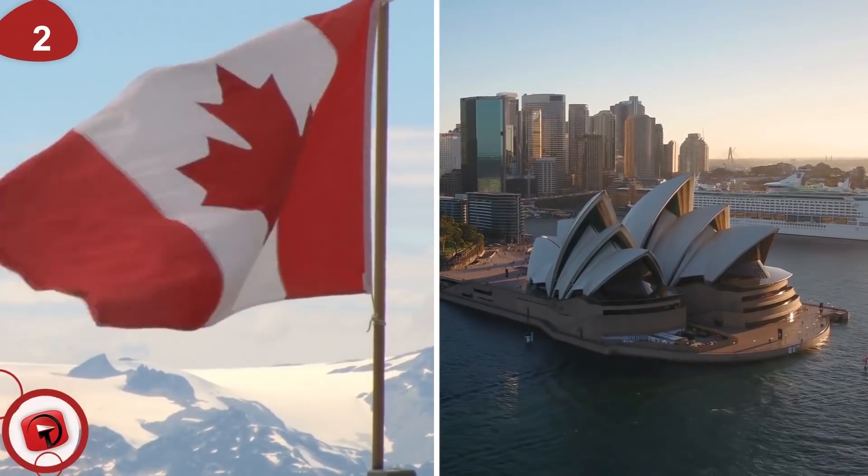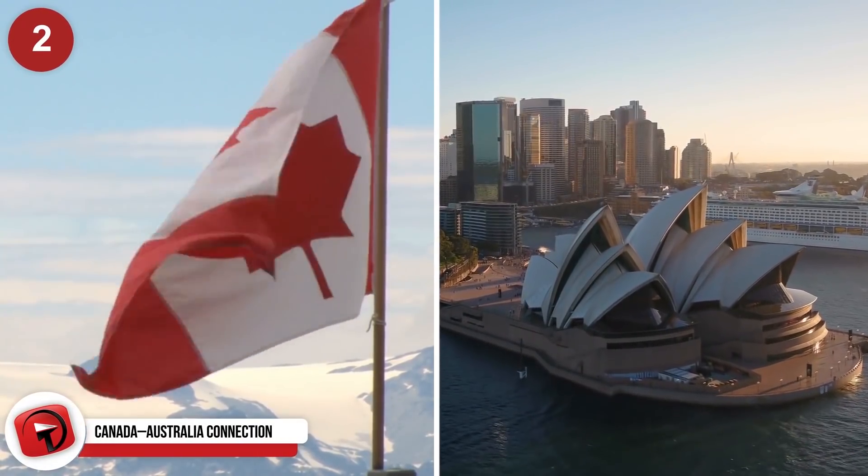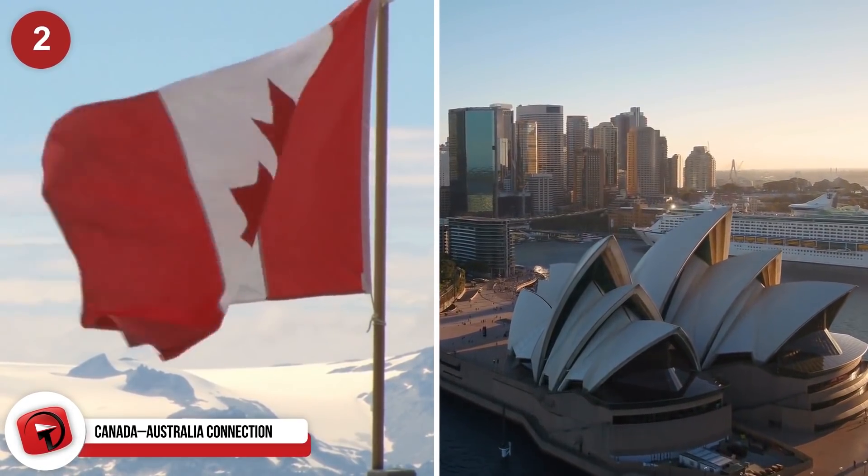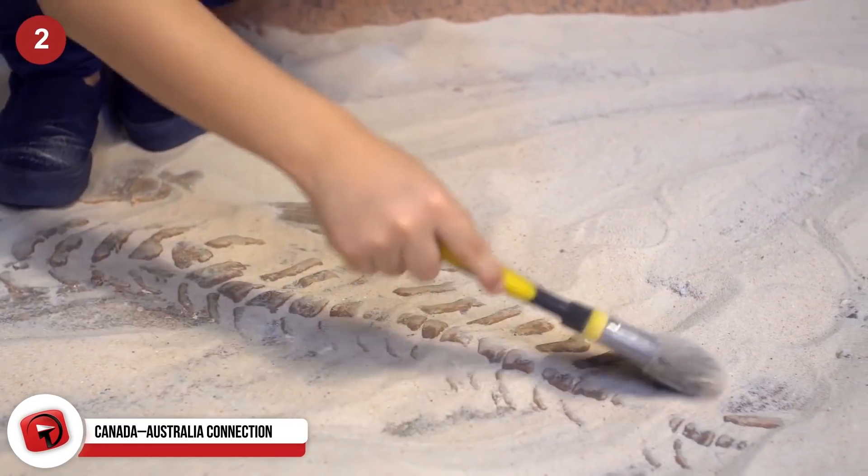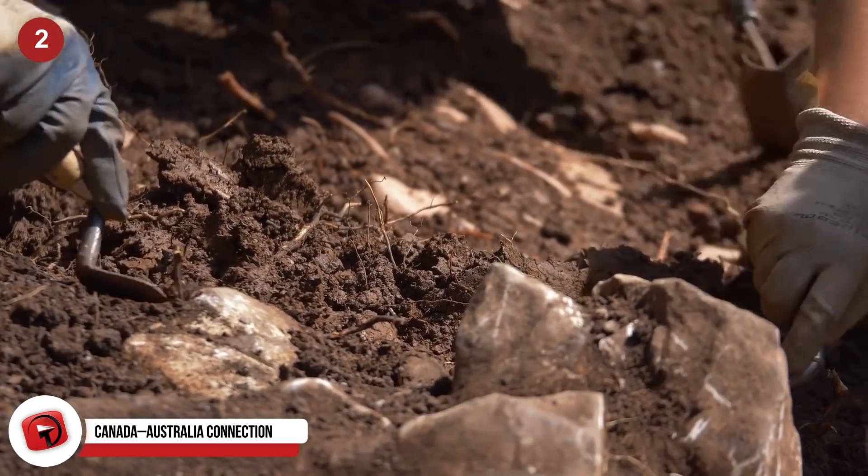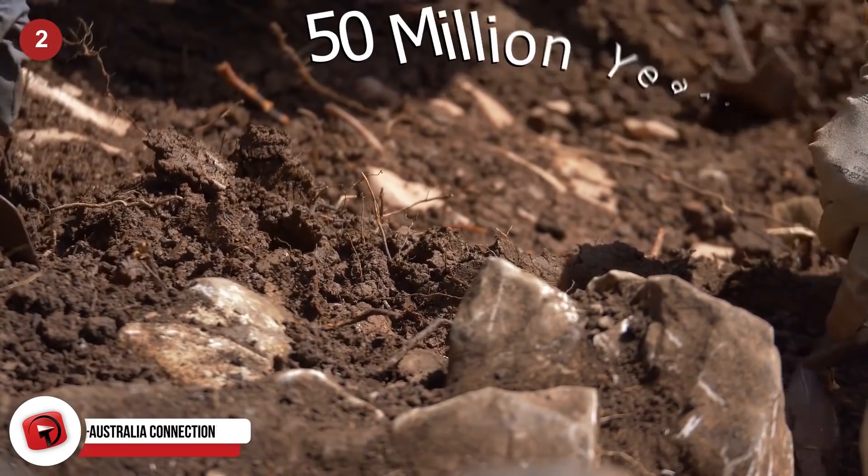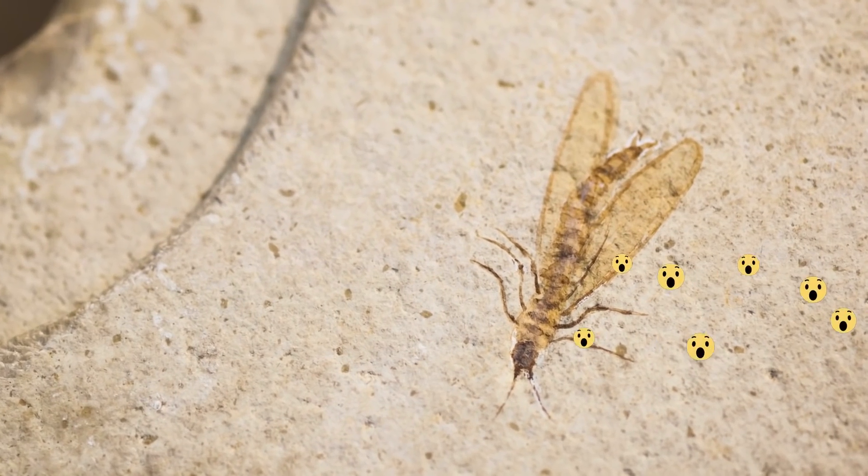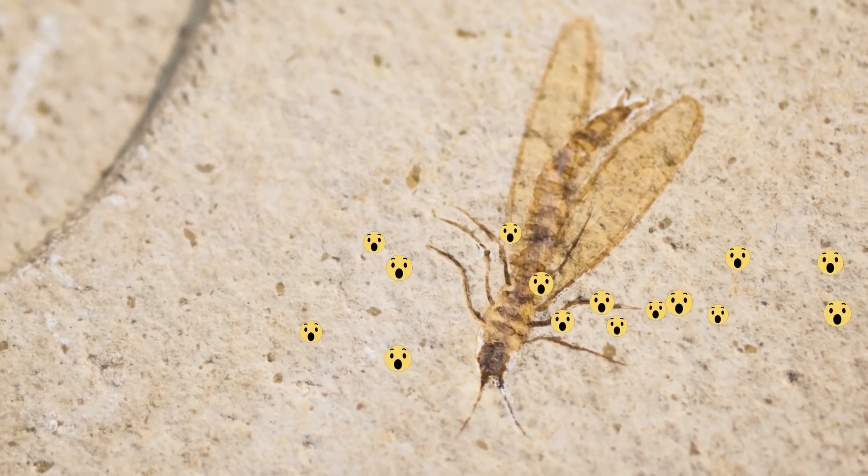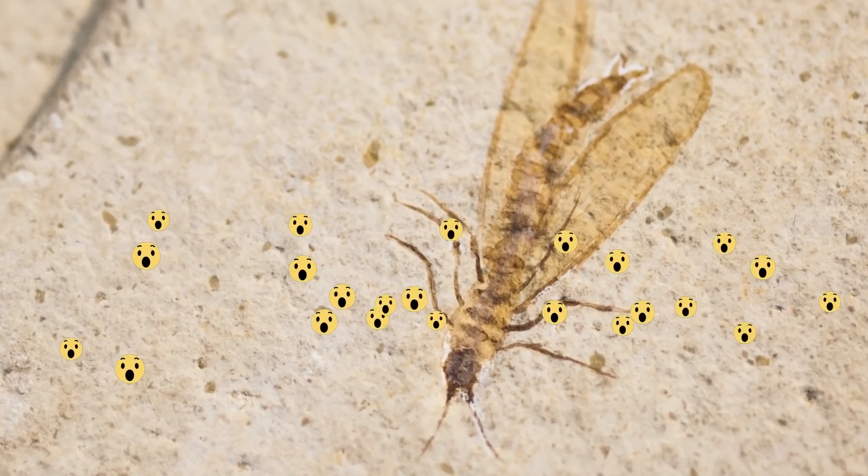Canada-Australia connection. It's true that Canada and Australia were both British colonies at one point, but new fossil discoveries show an even older connection between the two countries. The discovery of a tiny insect fossil in Canada estimated to be around 50 million years old has raised some serious questions about what the earth looked like all those years ago. The thing is, this tiny insect fossil found in Canada has a relative, and that relative lives exclusively in Australia.